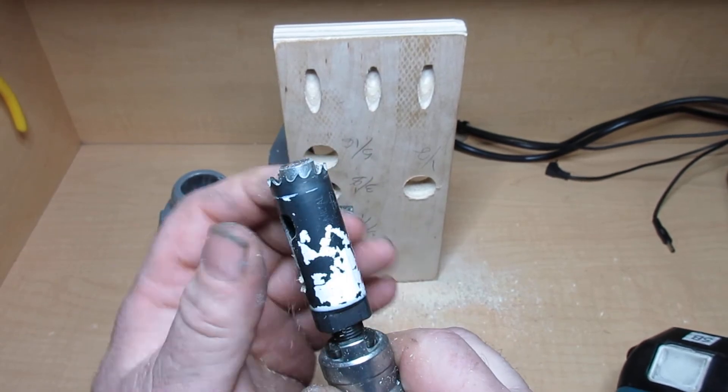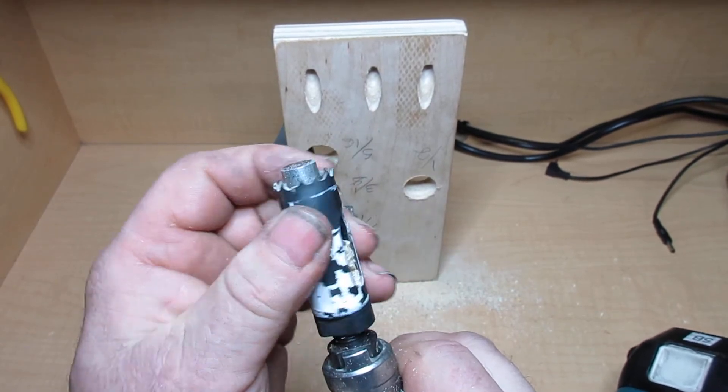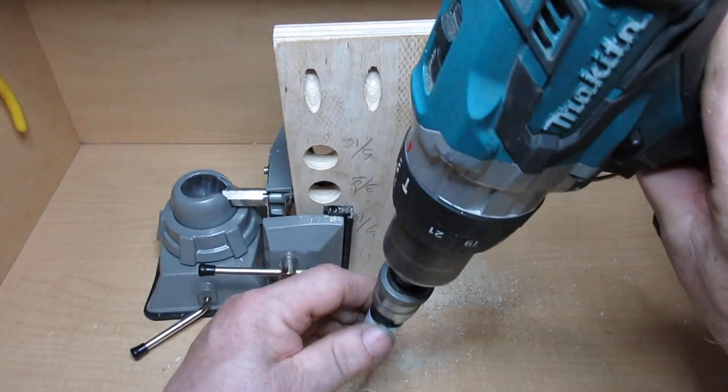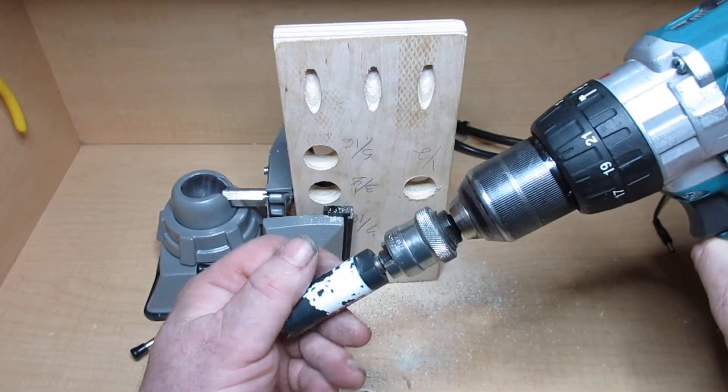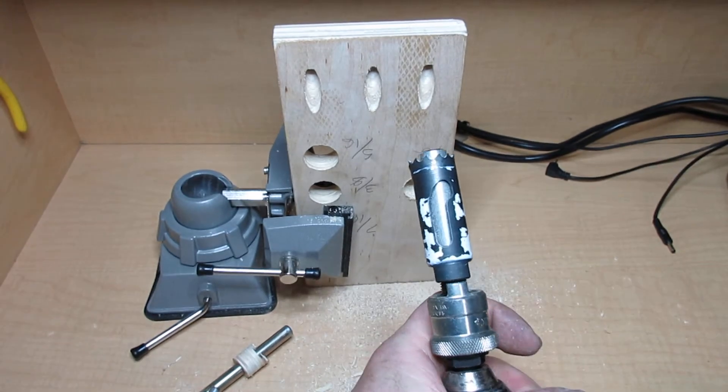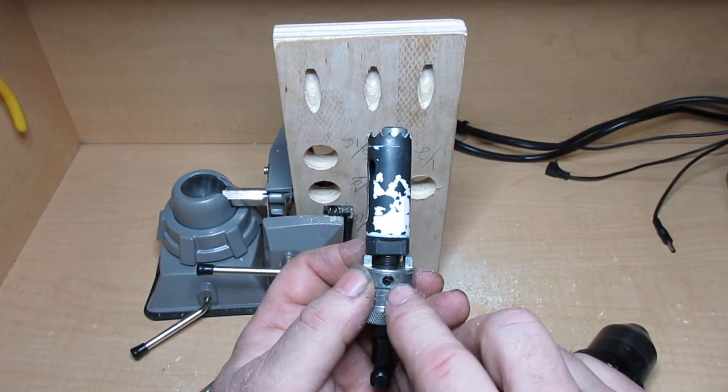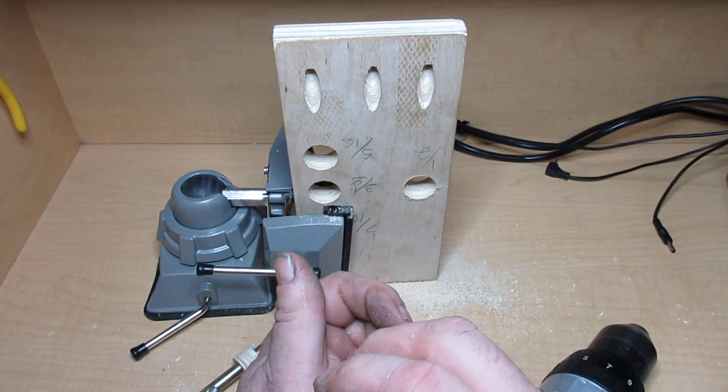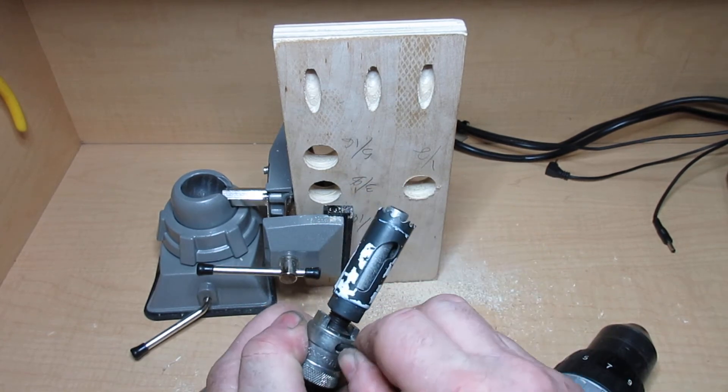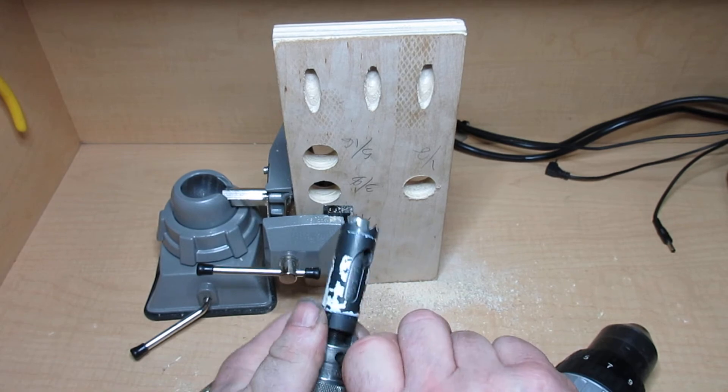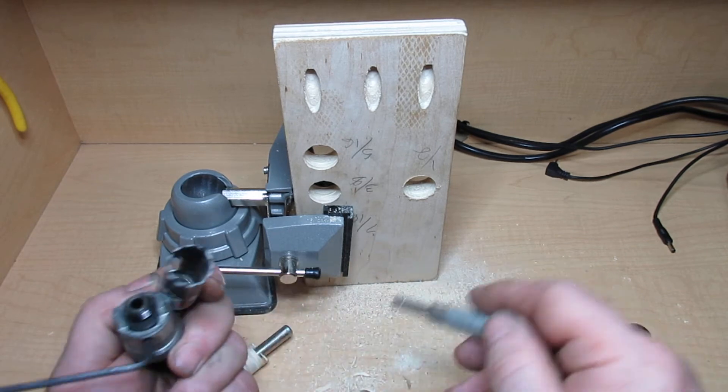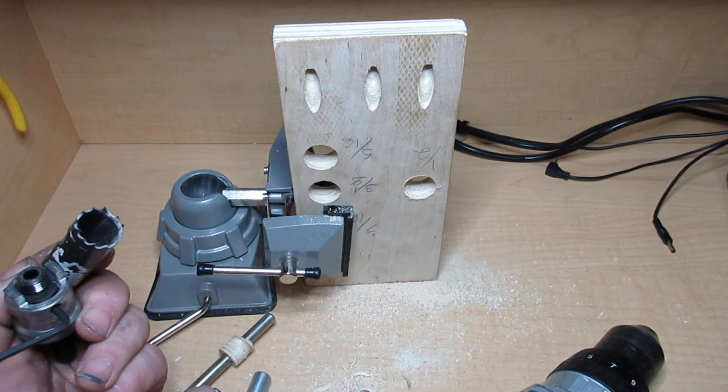And there you go. So now the one thing with the half inch is you cannot take the hole saw off because it's too thick to get through the original hole. The other sizes, the hole saw will come right off. I have to actually take the mandrel out of the hole saw arbor to get it and change out the bit, and that's easily done, just an allen key in there, boom, and now that should come out.